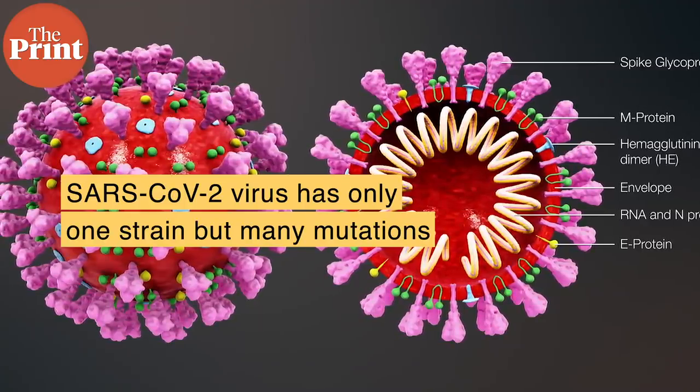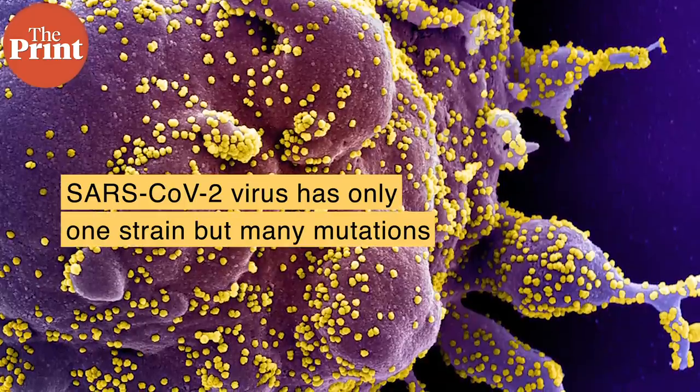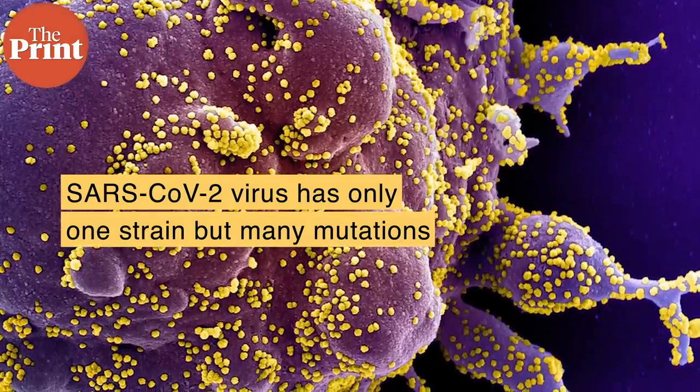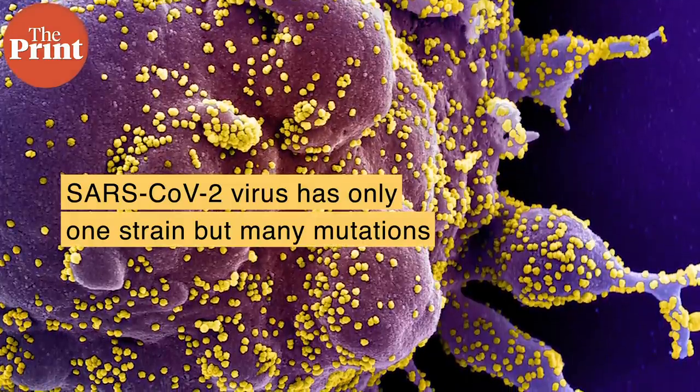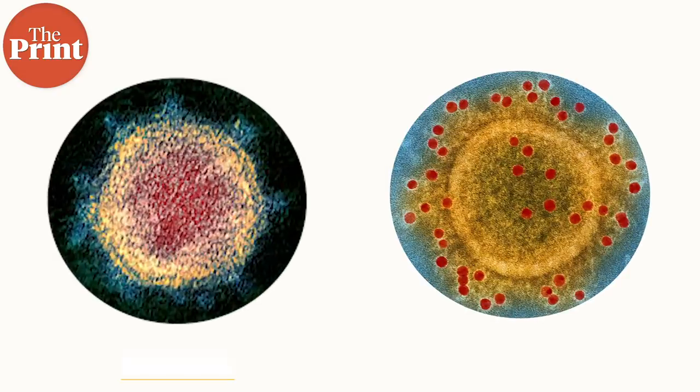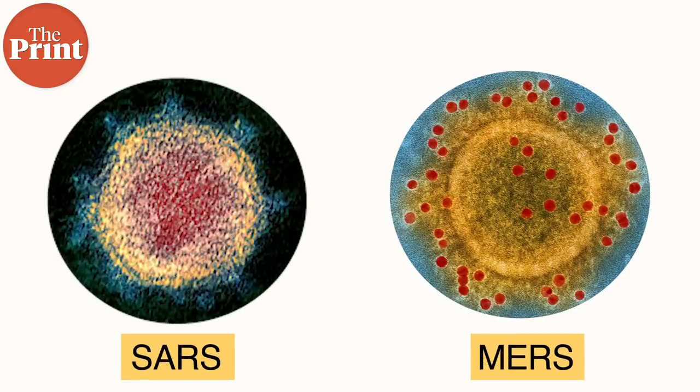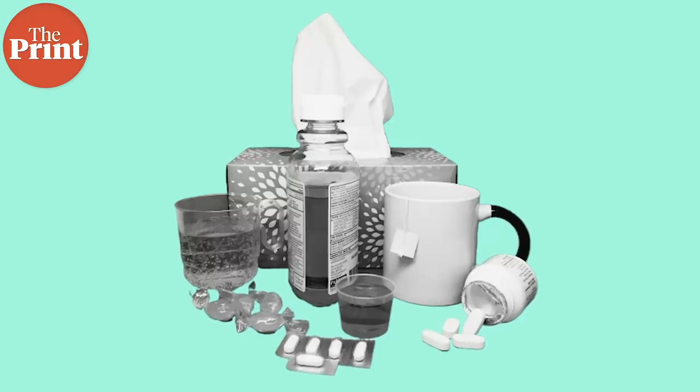In fact, SARS-CoV-2 itself is one of the many strains of the coronavirus. There are thousands of coronaviruses that we know about in animals, but humans have only seen six other strains before SARS-CoV-2 came along. Two of them were quite deadly — SARS and MERS — and both are contained now. But the other four strains regularly circulate in the human population, causing common cold-like illnesses.